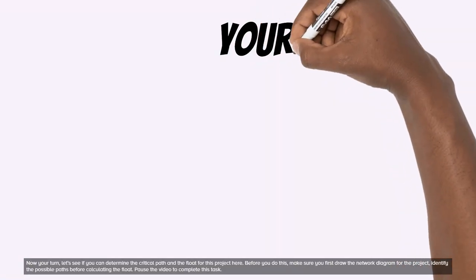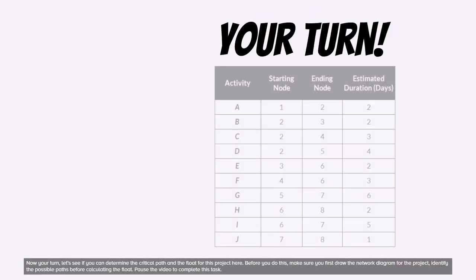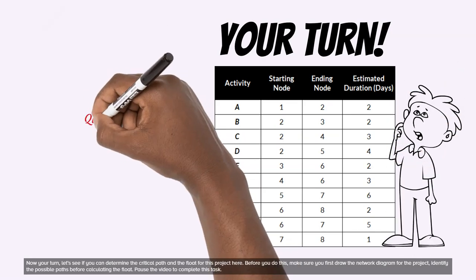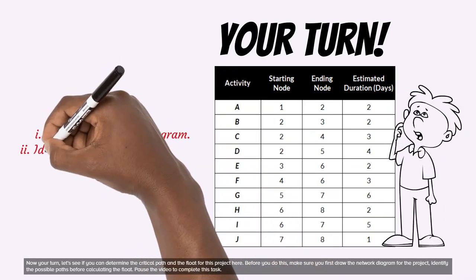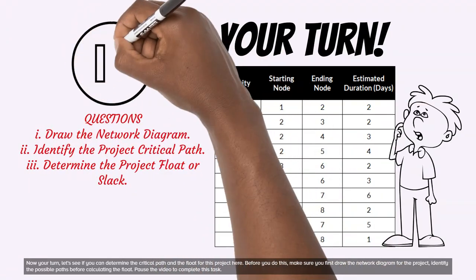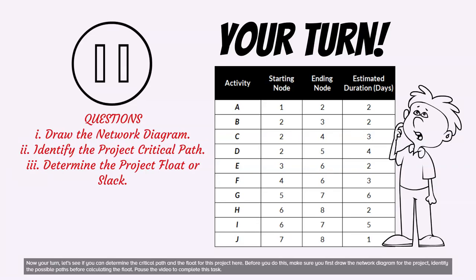Now your turn. Let's see if you can determine the critical path and the float for this project here. Before you do this, make sure you first draw the network diagram for the project. Identify the possible paths before calculating the float. Pause the video to complete this task.